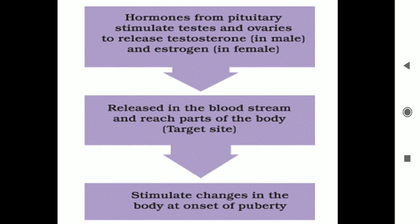These hormones are then released into the bloodstream and reach the target site where they need to go. Finally, they stimulate changes in the body at the onset of puberty — and you are at the age of puberty now.